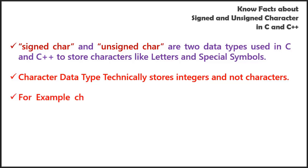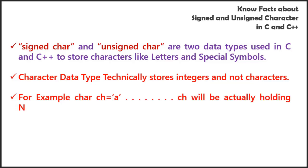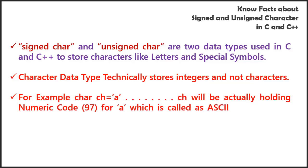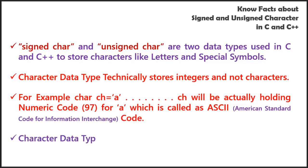For example, if I declare char and store 'a', it will actually hold the numeric code 97 for 'a', which is called ASCII — American Standard Code for Information Interchange. So character data type remains to be an integer. At the end of this session we will see some programs which will demonstrate that character technically holds an integer, that is an ASCII value, and not actual characters.